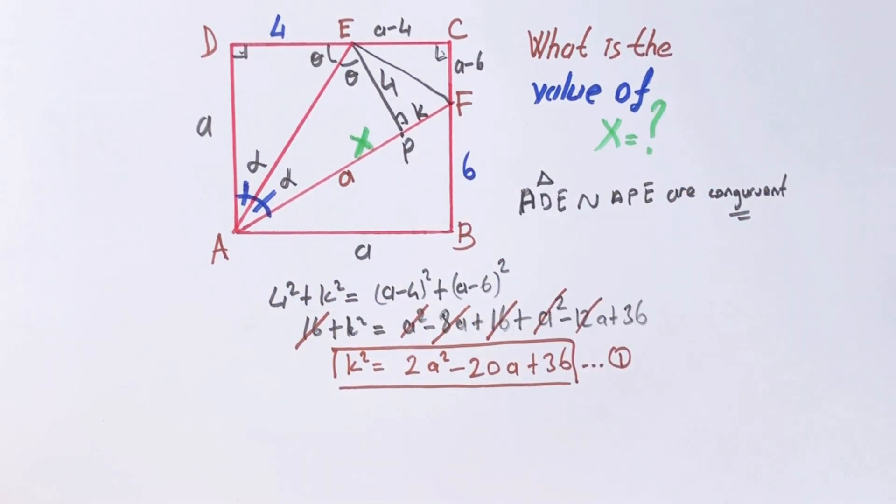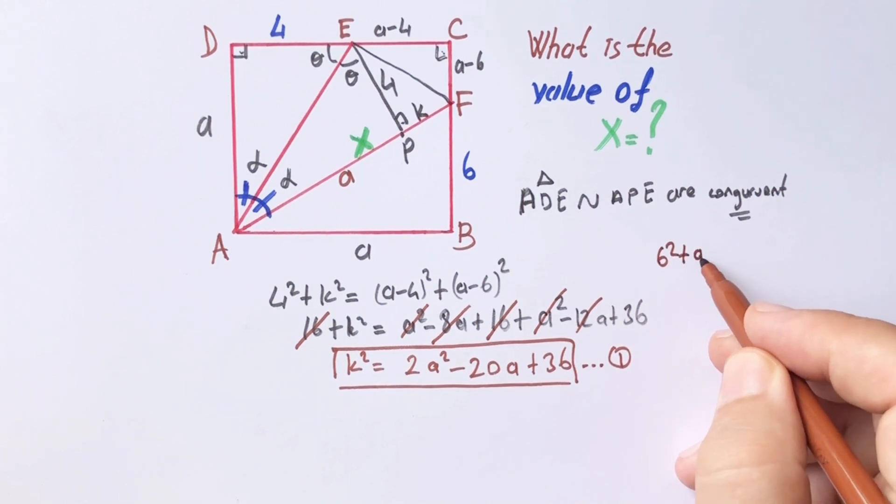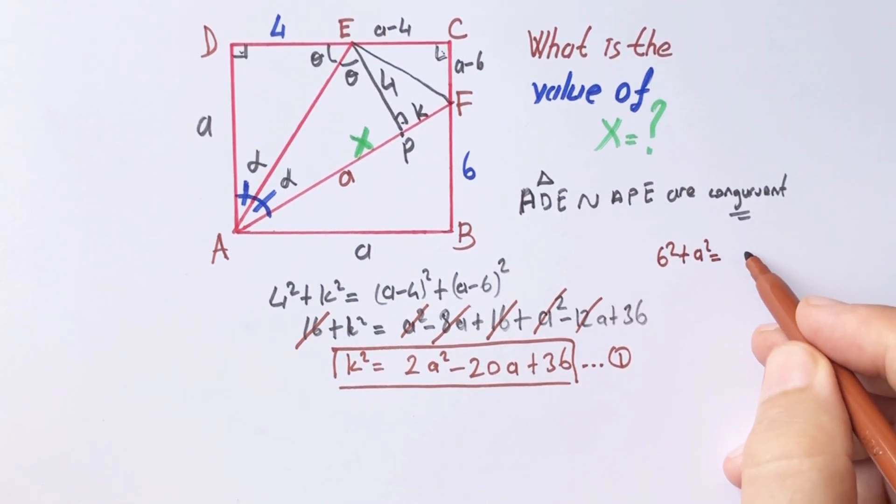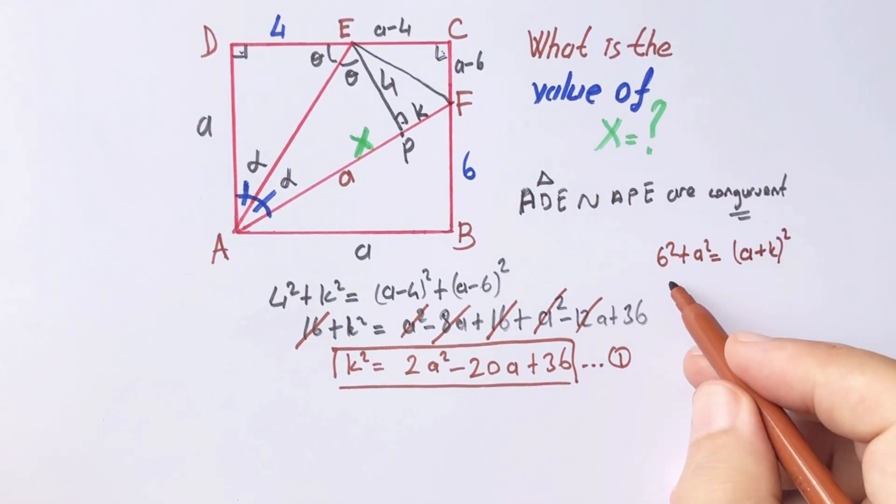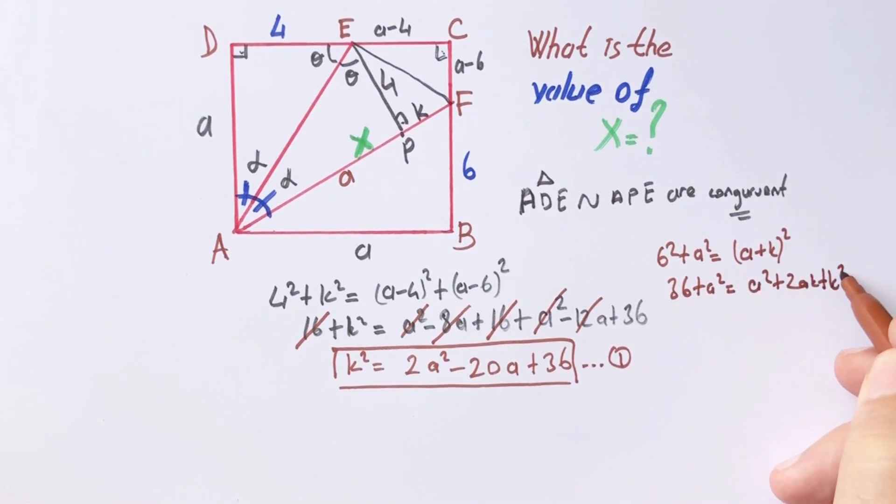6 squared plus a squared, let's write here, 6 squared plus a squared equal a plus k squared. 36 plus a squared, 36 plus a squared equal a squared plus 2ak plus k squared.